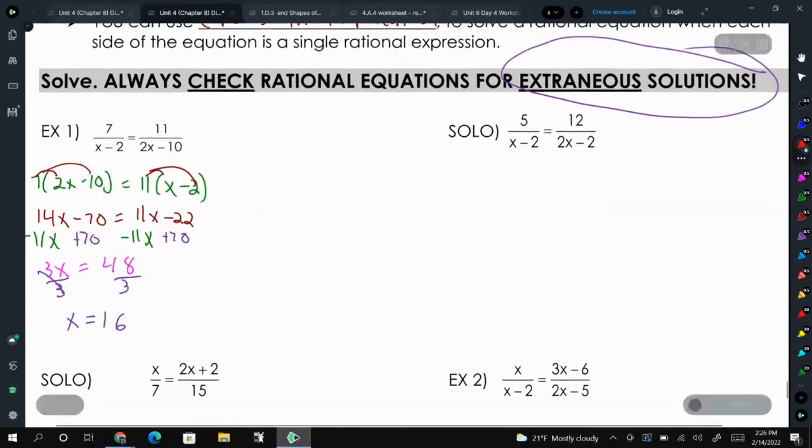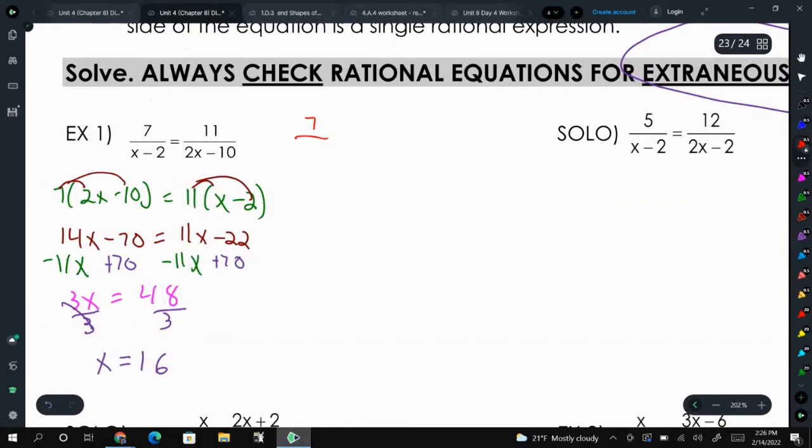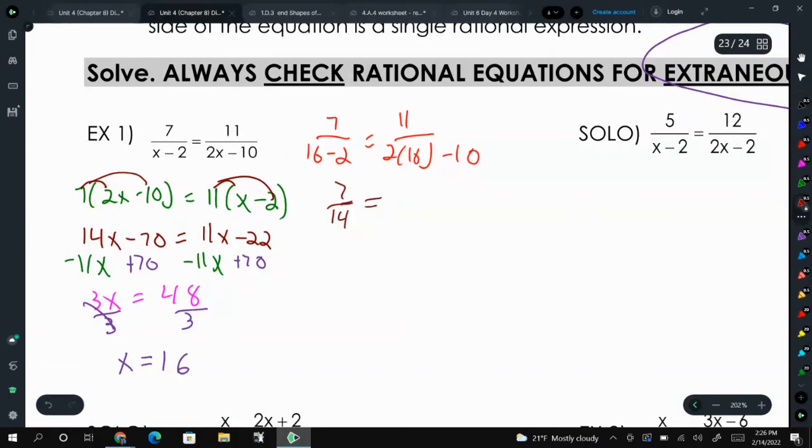We plug it into the original equation. So 7 over 16 minus 2 equals 11 over 2 times 16 minus 10. So if you simplify the left side, you get 7 over 14. And when you simplify the right side, you get 11 over 2 times 16 is 32 minus 10 is 22. And then we reduce both fractions: 1 half equals 1 half. So x equals 16 is a solution.